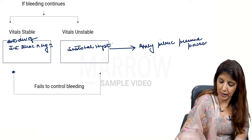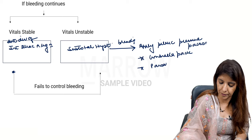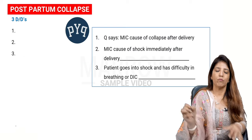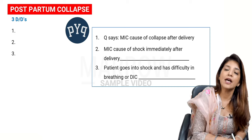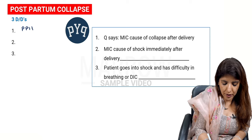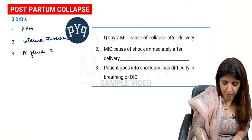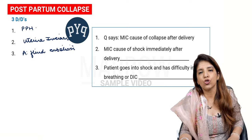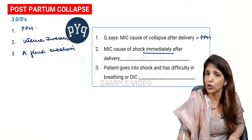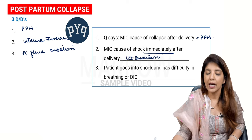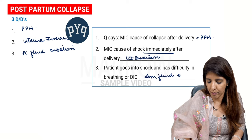Even after subtotal hysterectomy, if bleeding continues, apply pelvic pressure packs — the umbrella pack and parachute pack. When managing postpartum collapse, keep three differential diagnoses in mind: PPH is the most common cause of collapse after delivery; uterine inversion is the cause of immediate shock after delivery; and amniotic fluid embolism is suspected when the patient has shock combined with difficulty breathing or DIC.